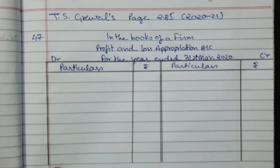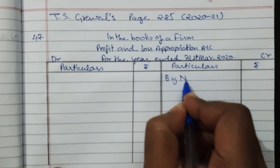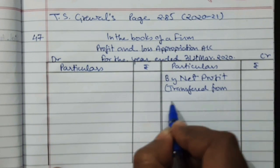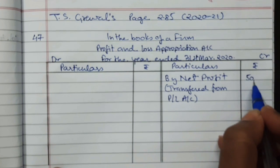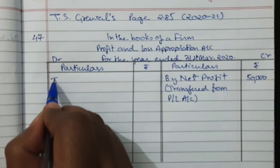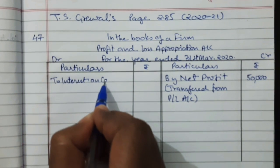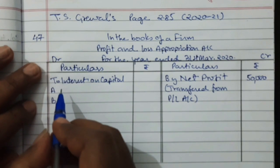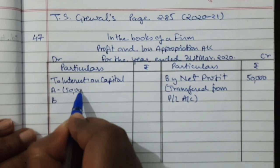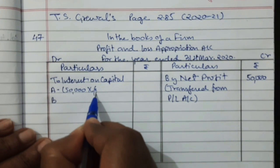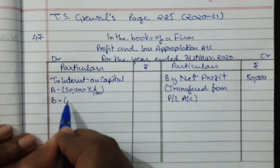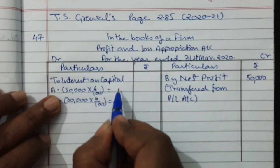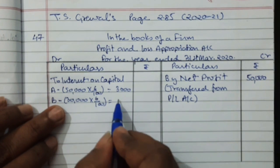Now the solution. Net profit earned is Rs. 50,000. We have to allow interest on capital for partner A and B. A's capital is Rs. 50,000 and B's capital is Rs. 30,000, both at 6% per annum. So their interest on capital will be Rs. 3,000 for A and Rs. 1,800 for B.